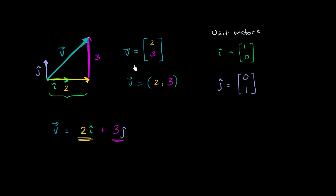So vector v can be represented as the column vector (2, 3), as '2 comma 3,' or as 2î + 3ĵ. Here î is the unit vector in the positive horizontal direction — to go the other way, you multiply by a negative — and ĵ is the unit vector in the vertical direction. As we'll see in future videos, in three dimensions you introduce a k̂. It's very natural to translate between these notations: notice the 2 and 3 correspond directly.